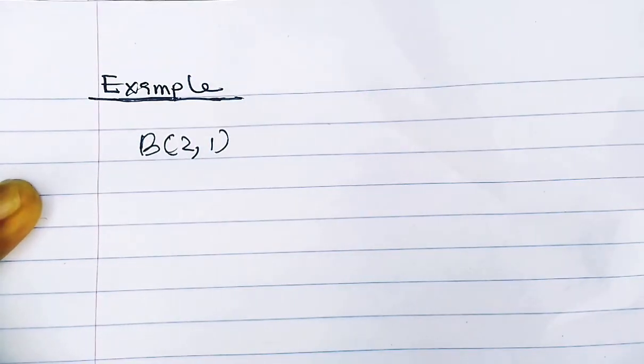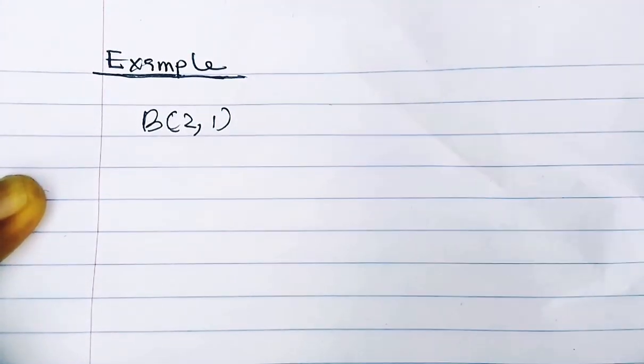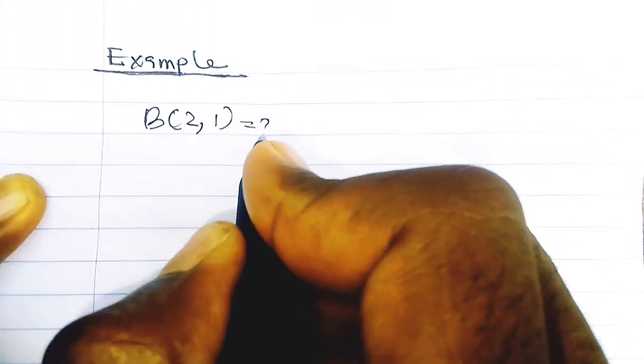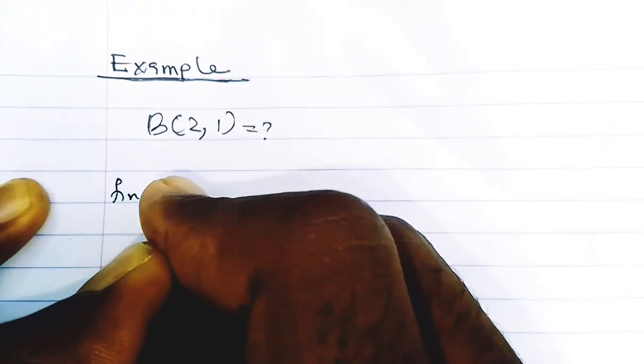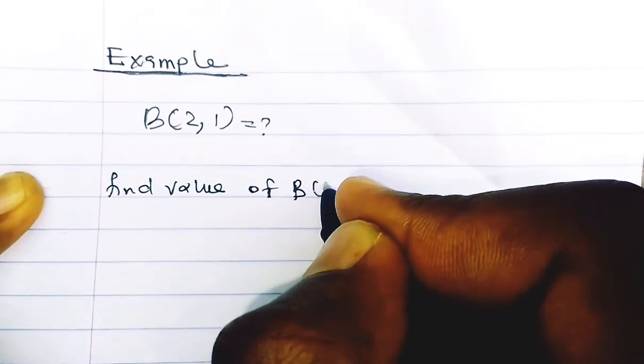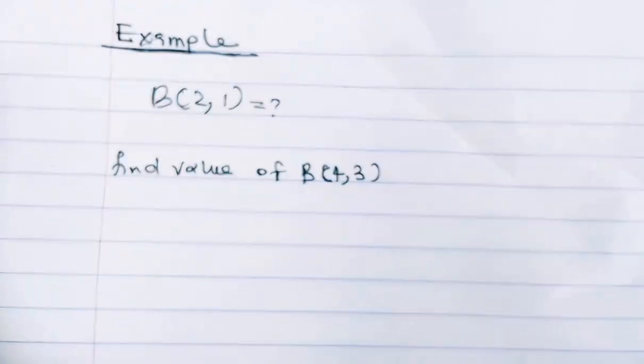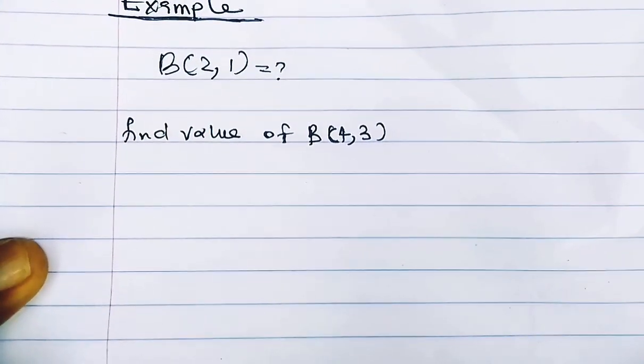We actually need this constant, and I'm going to explain why. Let's just solve an example and then you'll understand why we need the value of this. So, taking an example: we are asked to find the value of B(4, 3) — that is, Beta of 4 and 3.